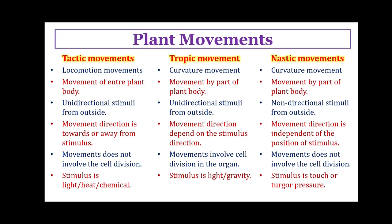Now let's see the differences and comparison between these three types of movements: tactic, tropic, and nastic movements. Tactic movements are movements of locomotion, while tropic and nastic movements are movements of curvature. In tactic movements the complete plant body shows movement, observed in lower cryptogams, whereas in nastic and tropic movements only some body part shows movement. The stimulus is unidirectional from outside in tactic and tropic movements, while in nastic movements a non-directional stimulus arising from outside is necessary.